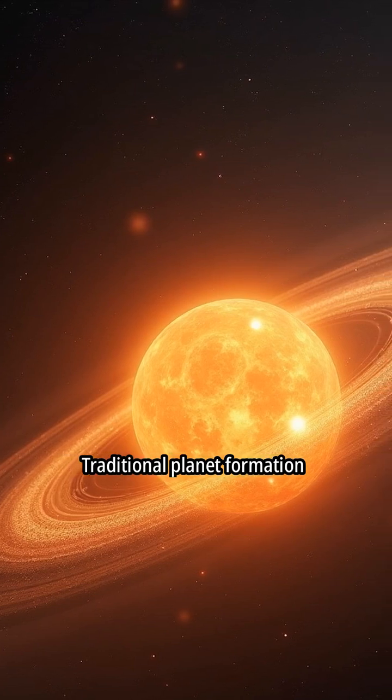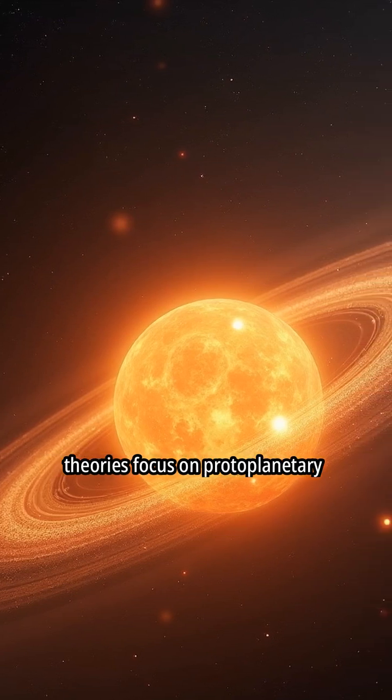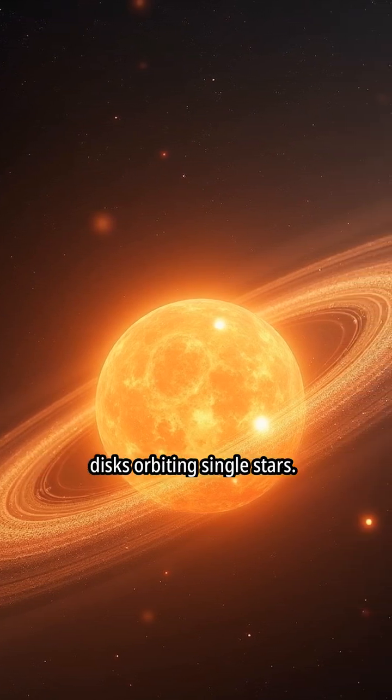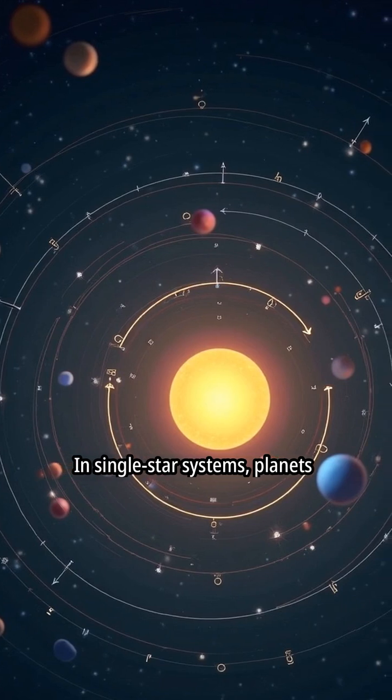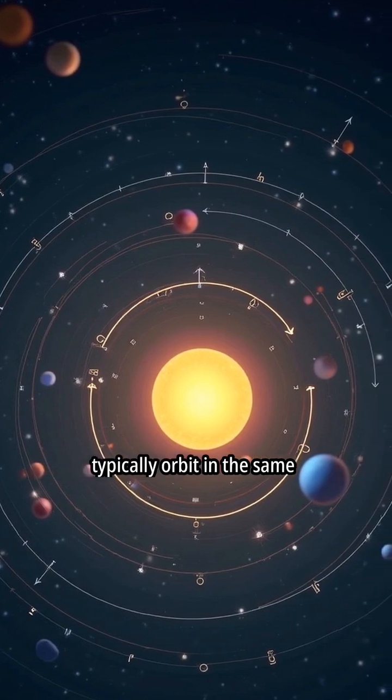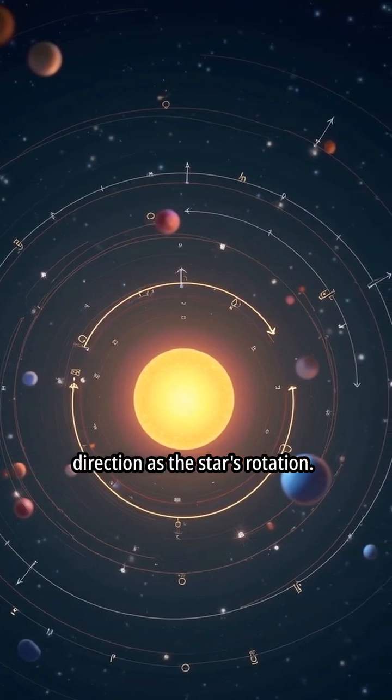Traditional planet formation theories focus on protoplanetary disks orbiting single stars. In single star systems, planets typically orbit in the same direction as the star's rotation.